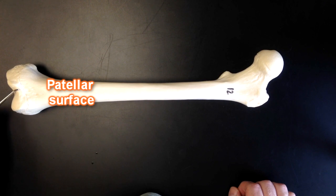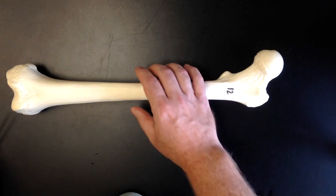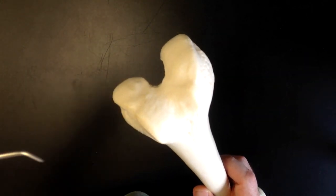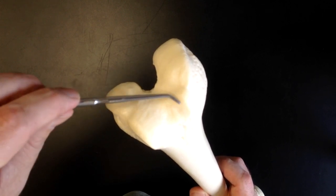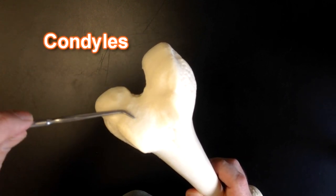This is where the patella is going to articulate with the femur. The patella would be the kneecap and it would sit right here. And then down here, if I were to show a close-up of this, these smooth articular surfaces right here are the condyles of the femur.